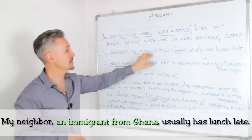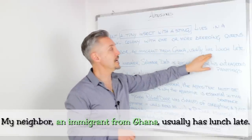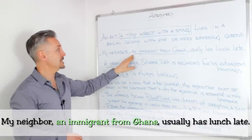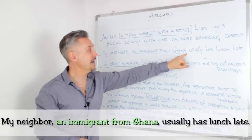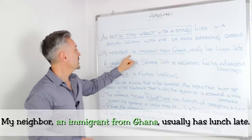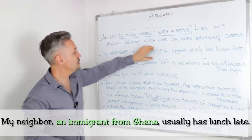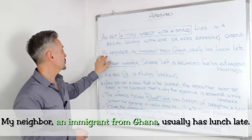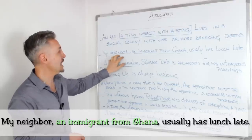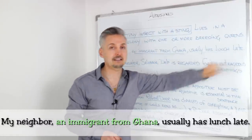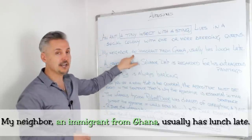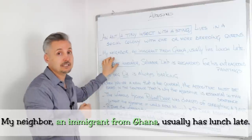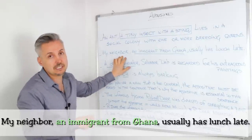Now let's take a look at the second example. 'My neighbor, an immigrant from Ghana, usually has lunch late.' So in this case, the appositive is 'an immigrant from Ghana.' Again, it is between two commas, and if you take out this extra information, the sentence still makes sense — 'My neighbor usually has lunch late.' But if I add more information, I describe the noun, in this case 'my neighbor,' which is the subject.